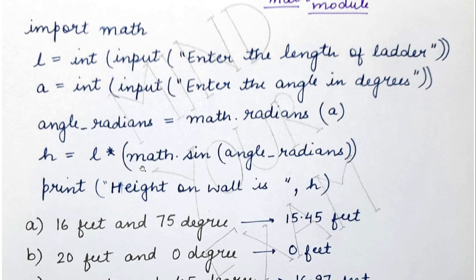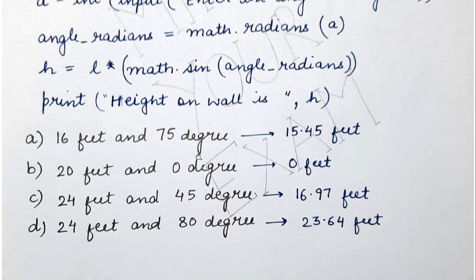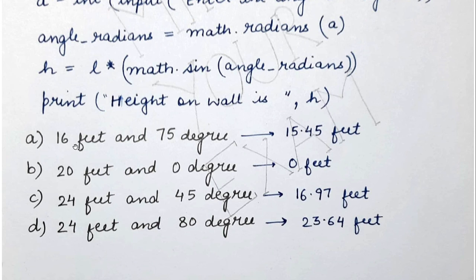Whatever height is computed, you can print it. The book specifies four different combinations of length and angle for which you must calculate the height of the ladder on the wall. When you supply each of those values as input to this program, you get the corresponding answers for the height.